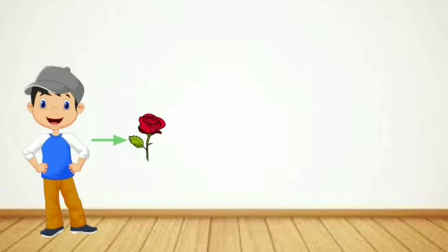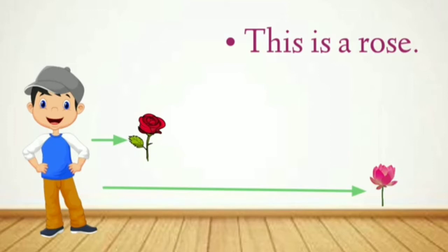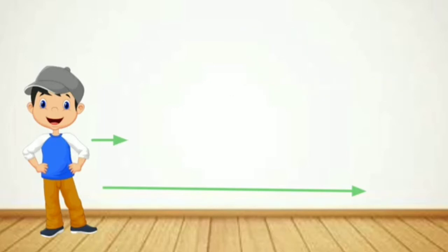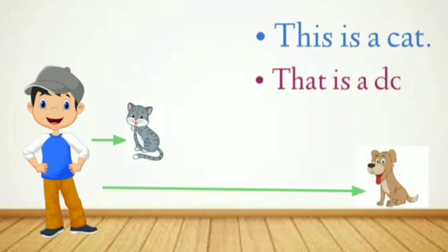Now making sentences using this and that: when a rose is near to me, the sentence is 'This is a rose.' The second flower is a lotus and it is far from me, so the sentence is 'That is a lotus.' One cat is near to me, so the sentence is 'This is a cat.' And the dog is far from me, so the sentence is 'That is a dog.'